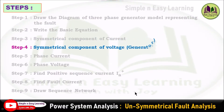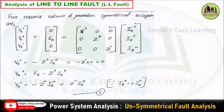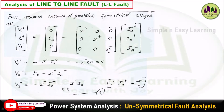Step 4: consider the symmetrical component of voltage derived from the sequence network of the generator. The equation is [Va0, Va+, Va−] = [0, Ea, 0] − Z_matrix × [Ia0, Ia+, Ia−]. Expanding: Va0 = 0 − Z0·Ia0 = 0 (since Ia0 = 0); Va+ = Ea − Z+·Ia+; Va− = 0 − Z−·Ia−. Since Ia+ = −Ia−, we substitute −Ia− with Ia+. This is equation 4.